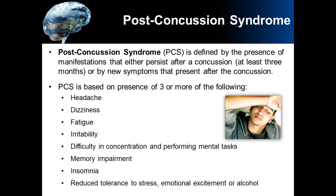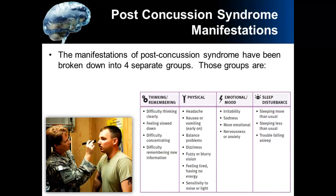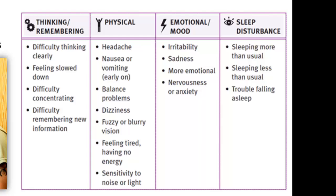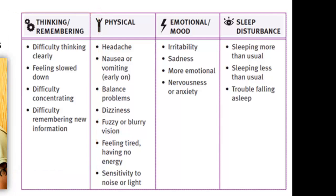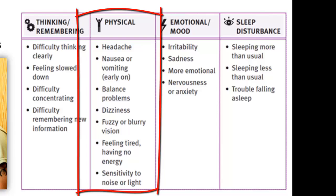The manifestations of post-concussion syndrome have been broken down into four separate groups: cognitive manifestations, physical manifestations, emotional manifestations, and sleep disturbances. Under the cognitive manifestations shown in the table on this slide, these include thinking and remembering — such as difficulty thinking clearly, feeling slowed down, difficulty concentrating, as well as difficulty remembering new information.